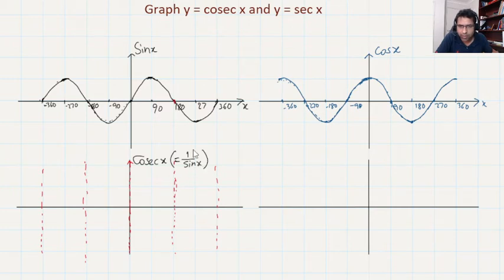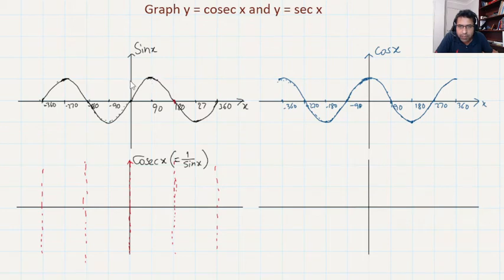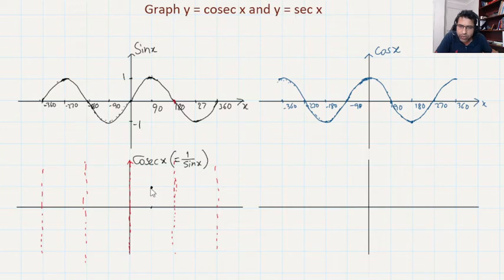Since 1 over 0 is undefined, those give the asymptotes. Now we check where the graph will be. The maximum of sine X is 1 and the minimum is negative 1. At 90 degrees, sine X equals 1, so 1 over 1 gives cosec X equals 1. So at the 90-degree position you are getting the point at 1.